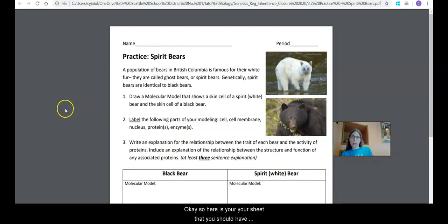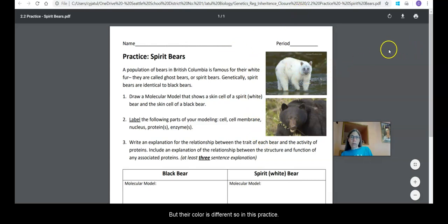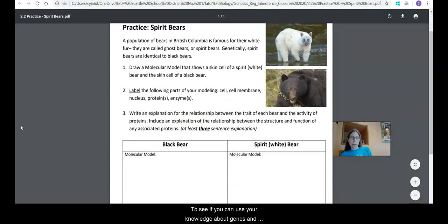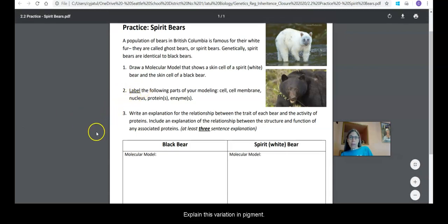Okay. So here is your sheet that you should have out practice of looking at this example of what are called spirit bears. So up in BC, Canada, there's bears that are found up there that are called ghost bears or spirit bears because they have this white coloration. They are genetically identical to black bears, but their color is different. So in this practice, we're going to ask you to see if you can use your knowledge about genes and variations in genes resulting in variations in proteins to explain this variation in pigment.